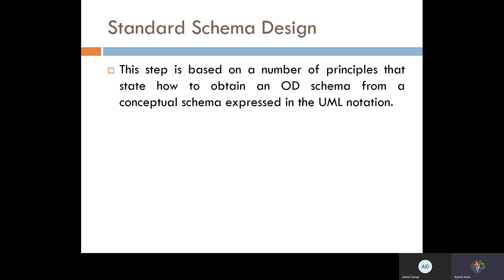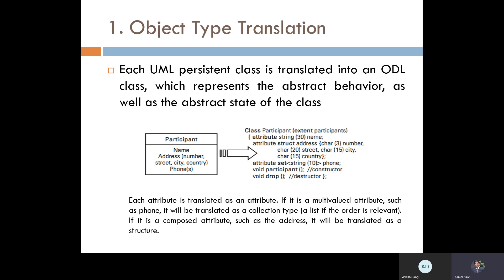A standard schema design is part of the object-oriented database design. The object type translation: each UML persistent class is translated into an Object Definition Language class, which represents the abstract behavior — the summarized form of that class. Here we have the participant with attributes name, address, and sub-attributes. We have defined these with the particular attribute and data type for this translation.